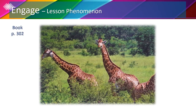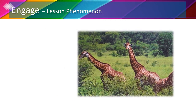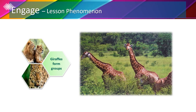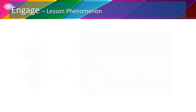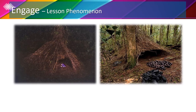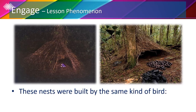Previously in lesson 2 we explored how characteristics can affect the survival and reproduction of an animal. On page 302 we can see a picture of some giraffes in the wild. Giraffes, like all organisms, have characteristics that help them survive in their environment. Giraffes form groups to watch for predators such as lions and leopards while the other giraffes are eating or sleeping. On page 303 we can see two pictures of nests built by the same kind of bird, the bowerbird.